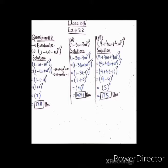پہلا question یہ ہے: evaluate (1 - ω - ω²)^7۔ آپ نے اس کی value find out کرنی ہے۔ bracket کے اندر (1 - ω - ω²) ہے۔ آپ یہاں -ω اور -ω² ان دونوں میں سے minus sign common لے سکتے ہیں، اندر آپ کے پاس (ω + ω²) رہ جائے گا۔